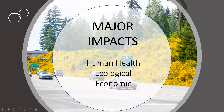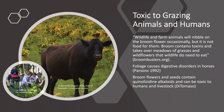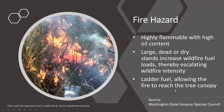The major impacts are to human health, ecological, and economic. Scotch broom can cause allergies in humans resulting in headaches, breathing difficulties, and burning eyes for up to two months of the plant's blooming season. The plant is toxic to grazing animals and humans, and can cause digestive disorders in horses. The seeds and flowers contain a toxic alkaloid. Scotch broom is also a fire hazard — it's highly flammable with high oil content. Large dead or dry stands increase wildfire fuel loads, escalating wildfire intensity. They are also a ladder fuel, allowing fire to reach the tree canopy.